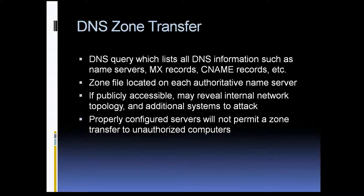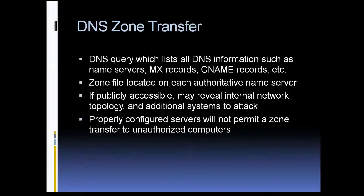If you can get that zone database, you'll be able to see a lot of the internal network for that company. There may be systems listed there that they didn't necessarily mean for anyone outside the company to see. It will add systems that you can put in your attack scope. Just remember that if you're doing a pen test and you come across a server that allows zone transfers, make sure you check with the company that those systems are in your target scope before you actually try to attack them. Most servers nowadays are properly configured where they will not permit zone transfers, but this is a viable attack vector that you need to check for.